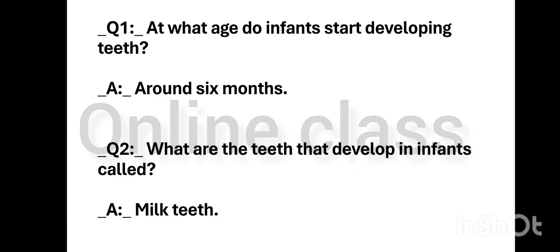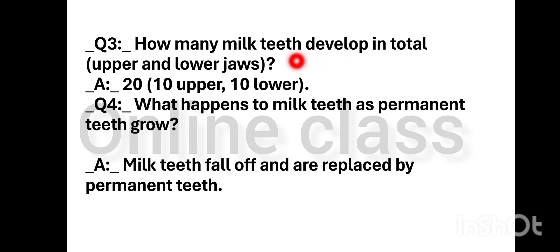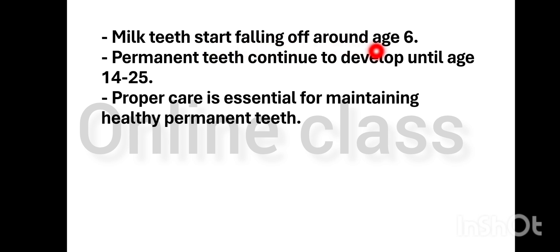Now we have to look at milk teeth and permanent teeth. At what age do infants start developing teeth? Infants develop teeth at around 6 months. The teeth that develop in infants are called milk teeth. There are 20 milk teeth in total. Milk teeth fall off and are replaced by permanent teeth, starting around age 6.